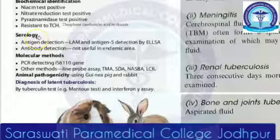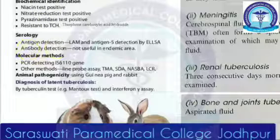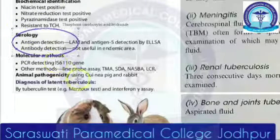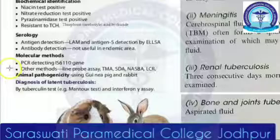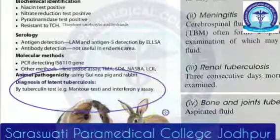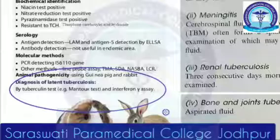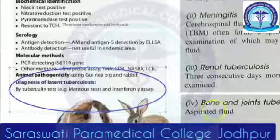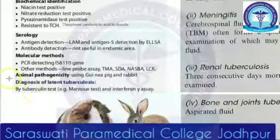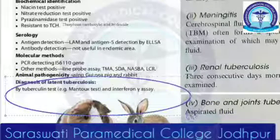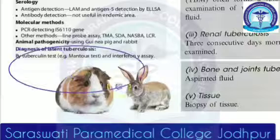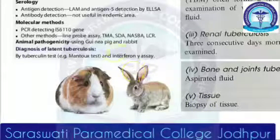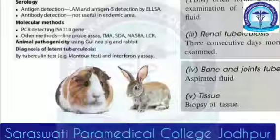For serology, you can do antigen detection or antibody detection. For molecular methods, write PCR, and you can also write typing for all exams. For animal pathogenicity, you do animal inoculation on guinea pig and rabbit. You can diagnose latent tuberculosis by tuberculin test, Mantoux test, or interferon-gamma assay.